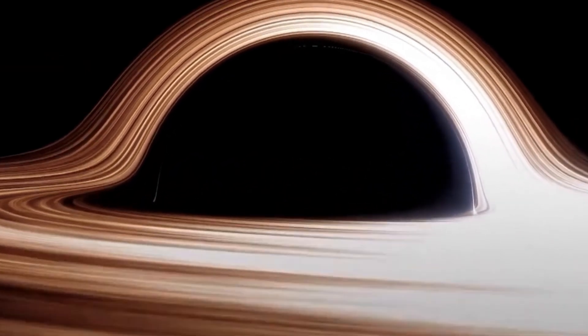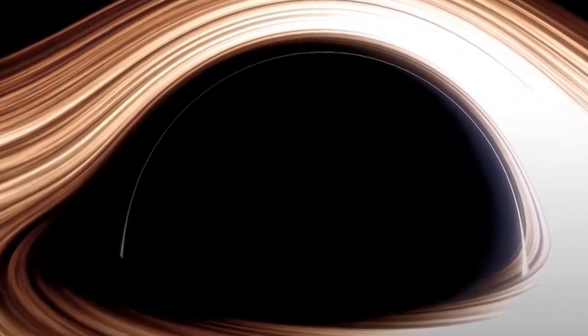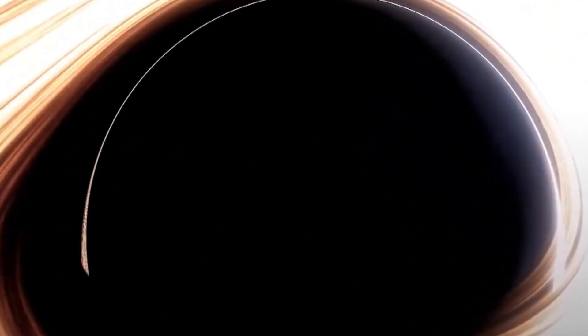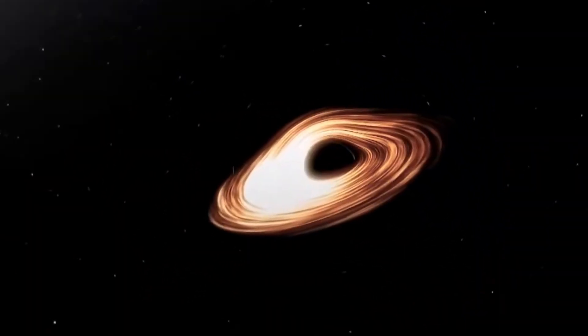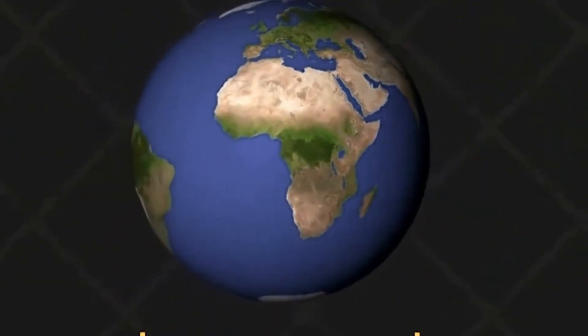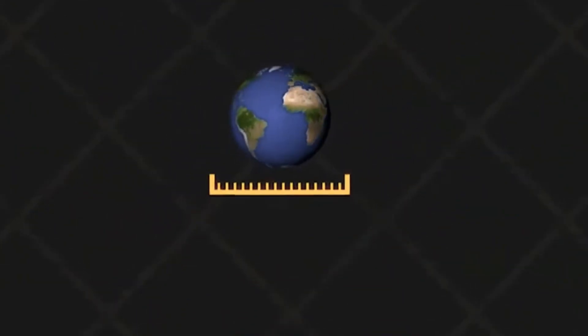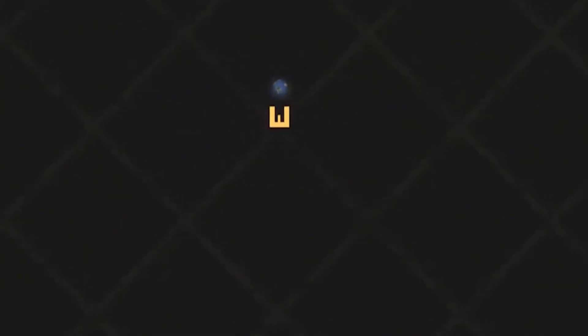To see something, light must bounce off it and reach our eyes. But from inside a black hole, light never returns. If Earth were crushed down to the size of a pea, its gravity would become so intense that even it would turn into a black hole.